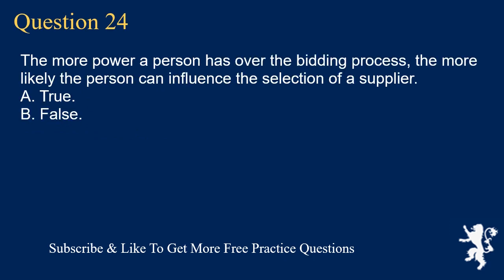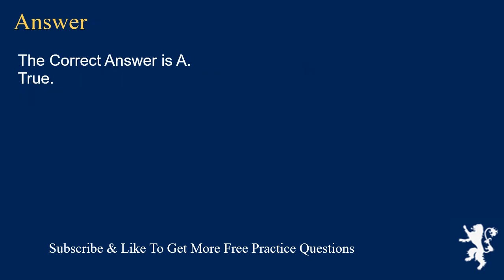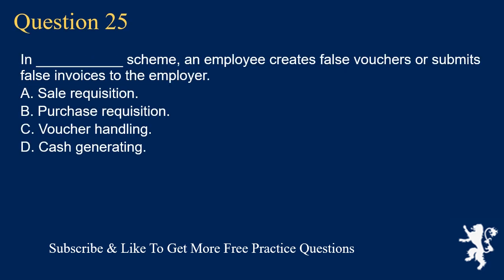Question 24: The more power a person has over the bidding process, the more likely the person can influence the selection of a supplier. A. True. B. False. The correct answer is A. True.